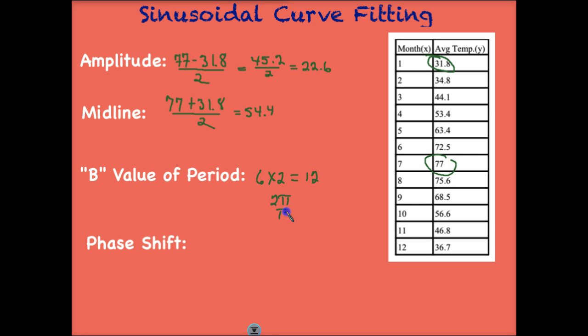So we know that 12 is the full period. It takes us 12 months, which makes sense to go through an entire cycle. 2 pi divided by 12. If we reduce that, we end up with pi over 6. That's our B value. How about our phase shift? Well, we're not starting at 0. We're actually starting at 1. So in this case, we would say that our phase shift is 1.